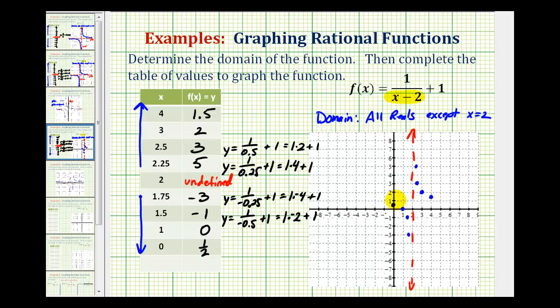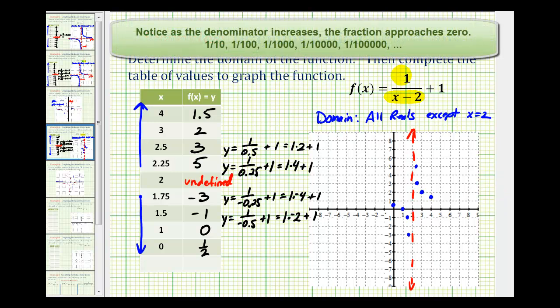There's one more thing we should probably consider before sketching our graph. We know it's going to approach this vertical asymptote. But if we look at this function and see how it behaves as x approaches positive infinity, or gets larger and larger, notice how this fraction here would approach zero. So we'd be approaching the value of zero plus one, or y equals one.